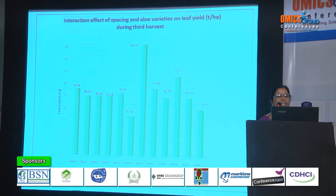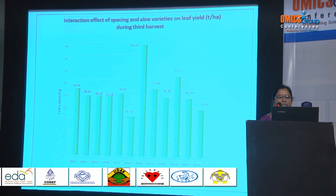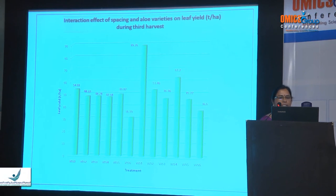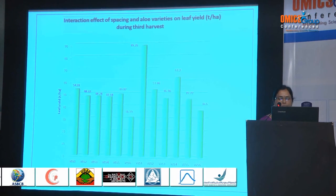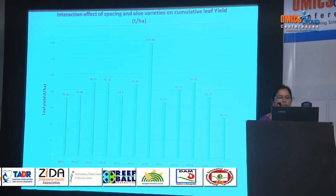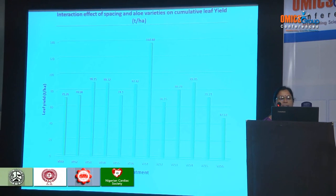This slide shows the interaction effect of spacing and aloe varieties on leaf yield during the third harvest. Yellow flowering type planted at 45×45 cm produced the highest yield of 89.26 tons per hectare. Regarding cumulative leaf yield per hectare, planting yellow flowering type at 45×45 cm spacing produced maximum yield of 137.47 tons per hectare.